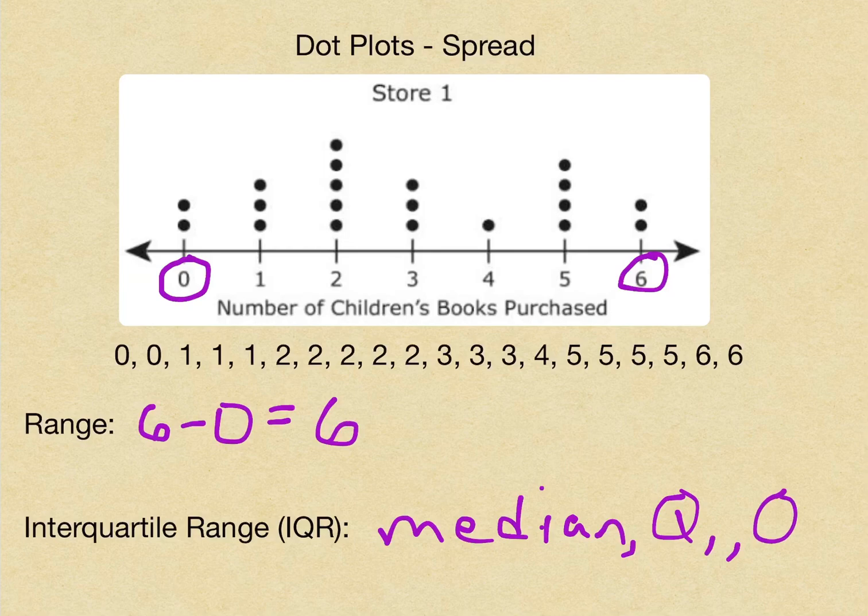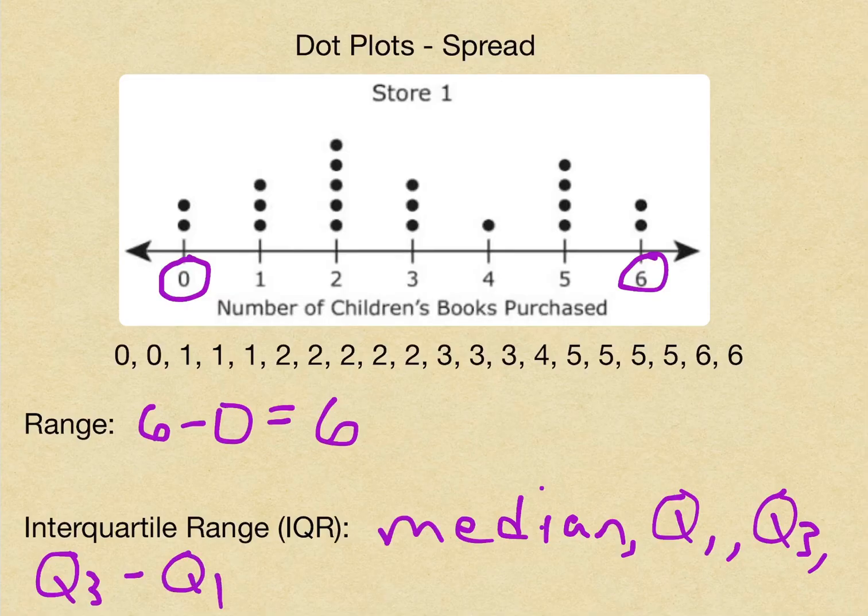Quartile one, our first quartile, our third quartile, and then you subtract quartile three minus the first quartile to get your interquartile range. Like I said, we don't normally compare that on dot plots, but if they asked you to, you would know how to find it.